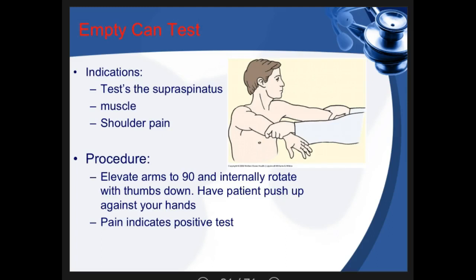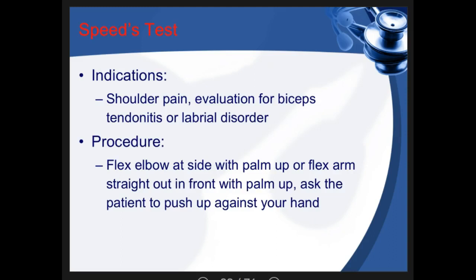The empty can test assesses the supraspinatus muscle — the patient holds arms out with thumbs rotated down as if emptying a can, and resistance is applied downward to check for pain. Speed's test is for bicipital tendinitis, causing pain on the anterior shoulder, and can also indicate a labral disorder. Labral disorders are difficult to assess as they don't show up easily on MRI or examination, so patients with chronic unexplained shoulder pain should be referred to orthopedics.